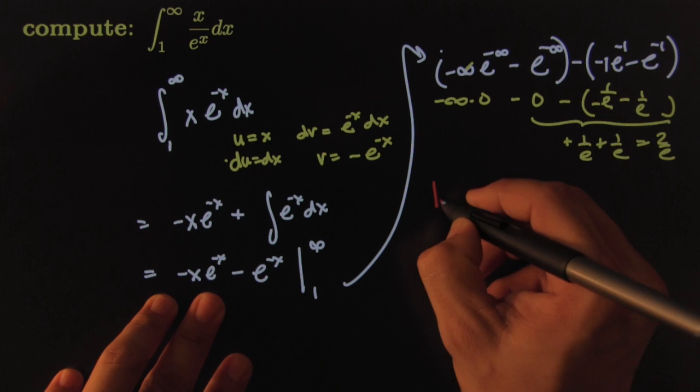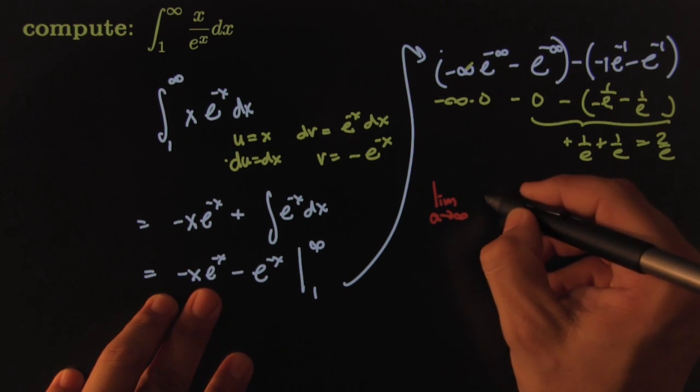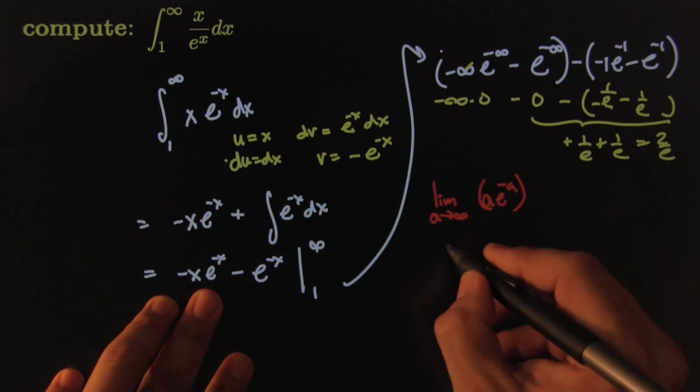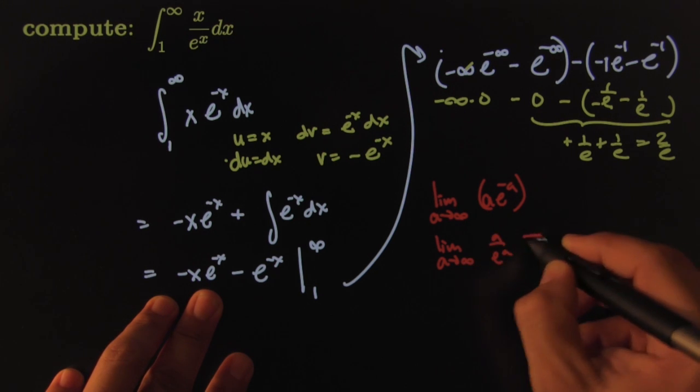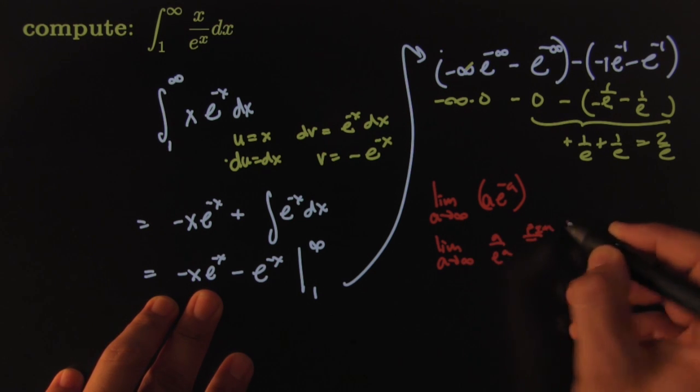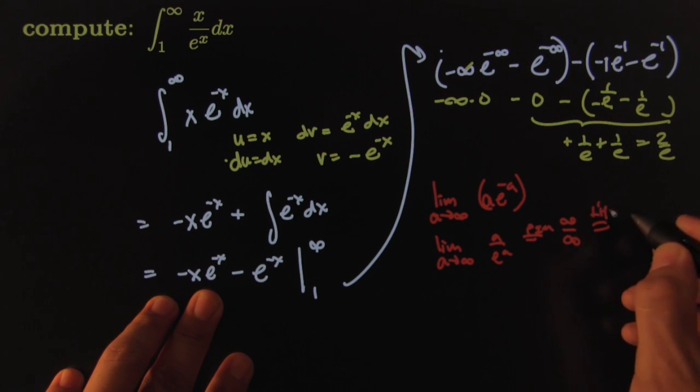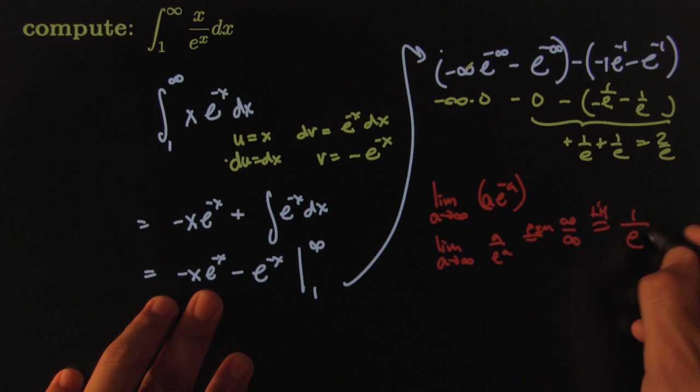So I'm going to go with the limit as a goes towards infinity of a, e to the negative a. Which would become, of course, the limit as a goes towards infinity of a over e to the a. Which when I tried the plug-in method gives me infinity over infinity, which is perfect. Because then I could use my powerful L'Hopital procedure. So this becomes 1 over e to the a.